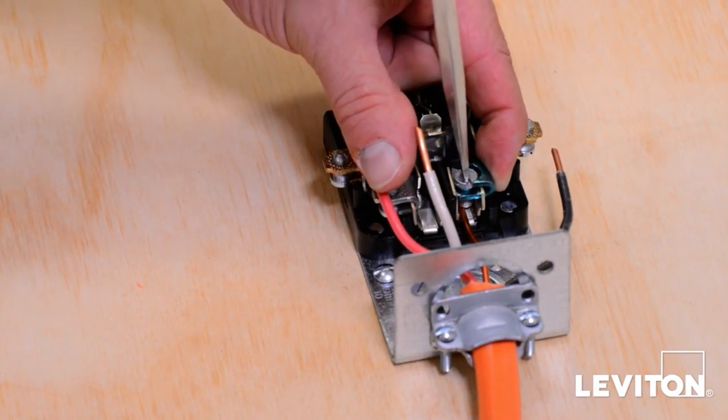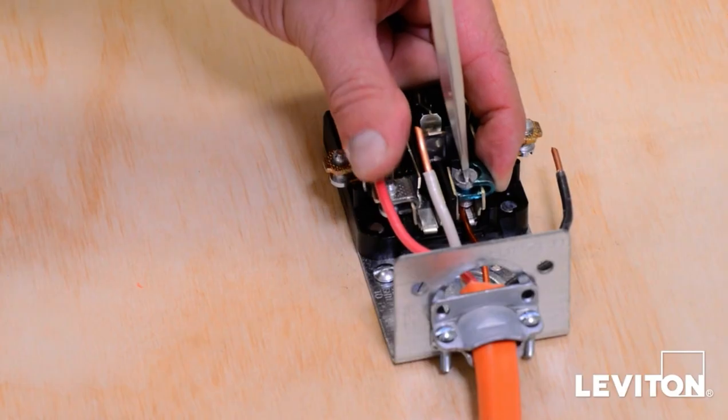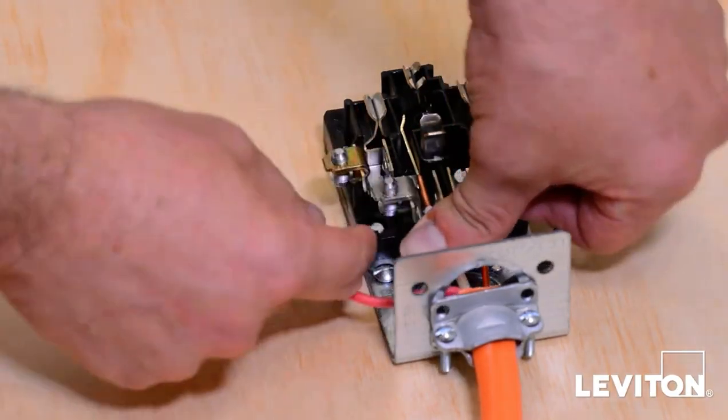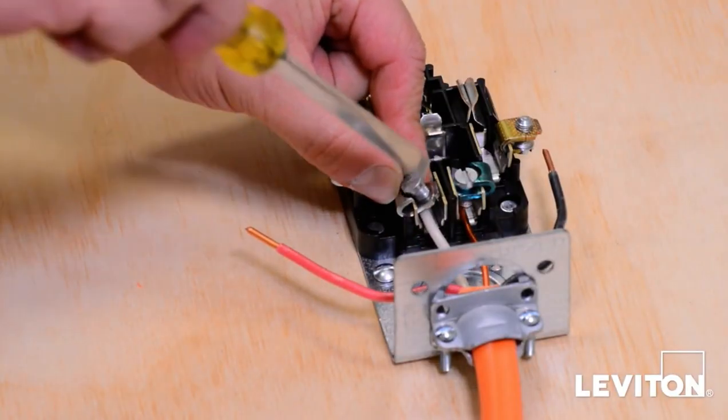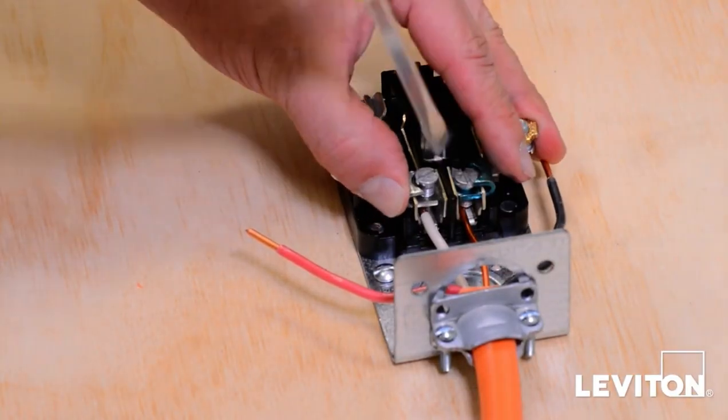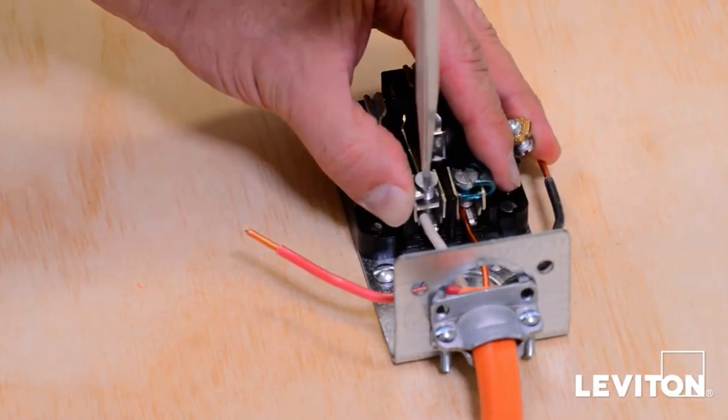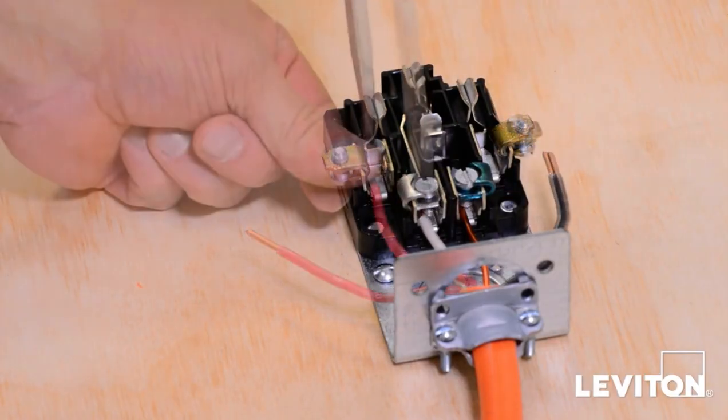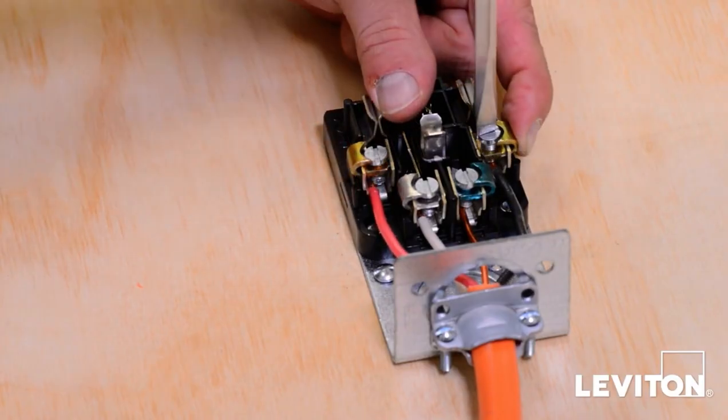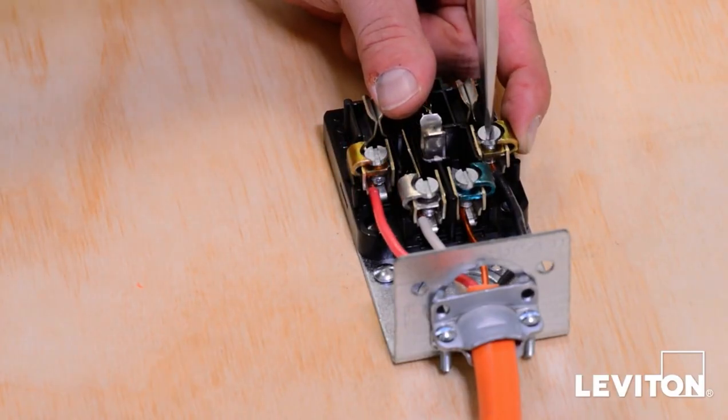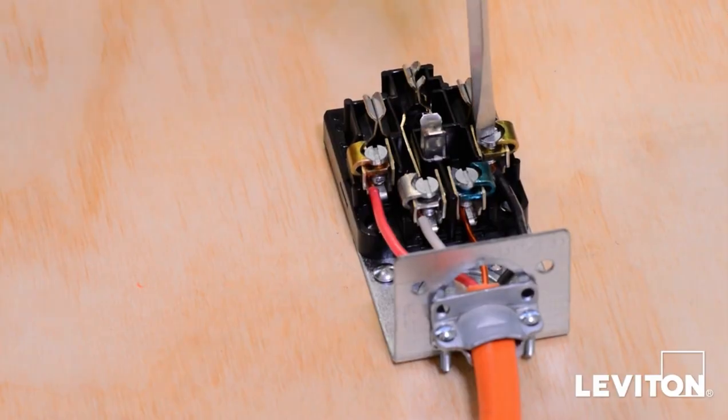Insert the ground wire under the green screw, the white neutral wire under the silver screw, and the remaining hot wires under the brass terminals. Tighten terminal screws to 25 inch pounds.